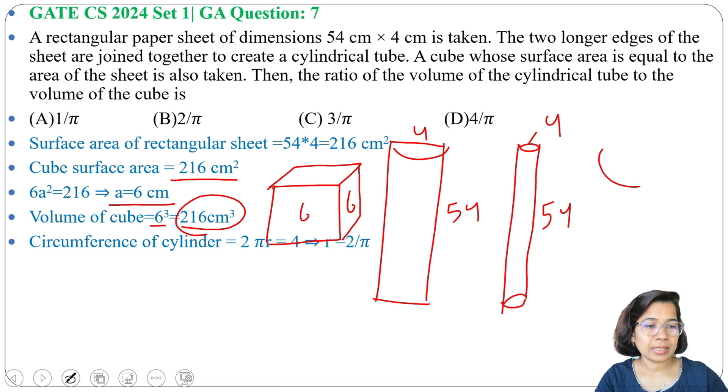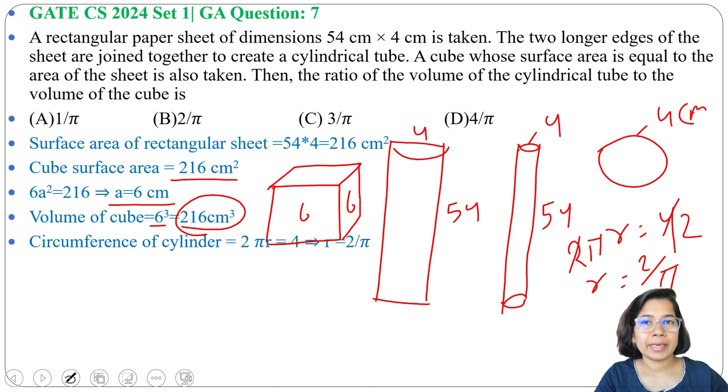In case of cylindrical tube, the circumference of the cylinder, this is the cylinder circumference and this formula is 2πr. And we know 2πr is 4 cm. 2πr equals to 4, so r equals to 2 divided by π. We got the radius.